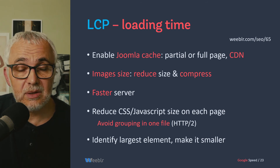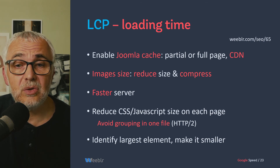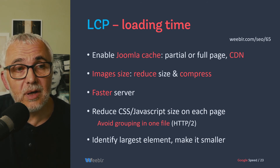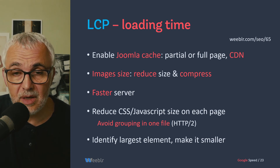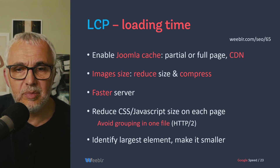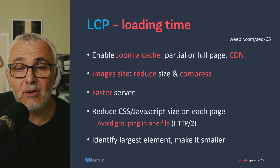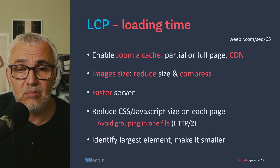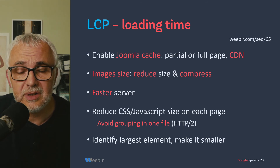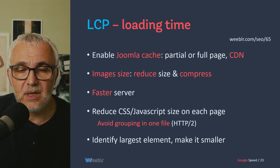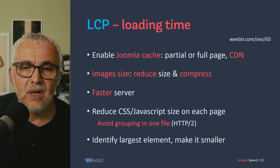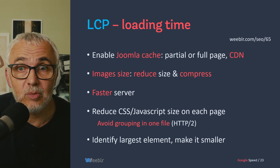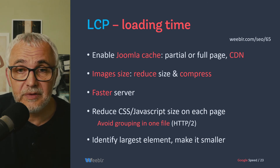One thing that's often overlooked but often very efficient is just to get a faster server. You might have to spend a little bit more money per month, but it's often an easy win. Another thing that will affect largest contentful paint is to reduce the amount of CSS and JavaScript on each page, since you have to download all of it. I would advise not grouping every CSS and JavaScript into bundle files — it's much better to reduce them and load only the required CSS or JavaScript on each page. Now that most servers are running HTTP/2, this is more efficient anyway. You can also identify the largest elements on the page and try to make them smaller, be it an image or a blob of text.